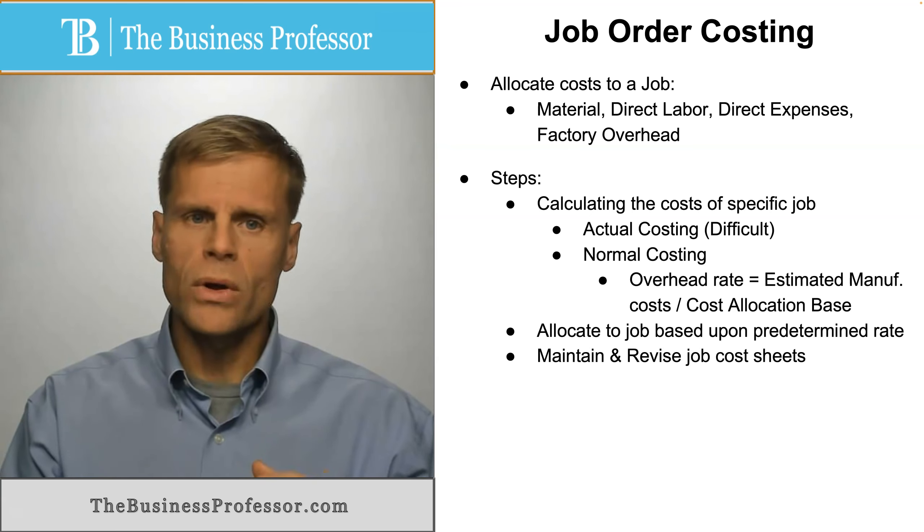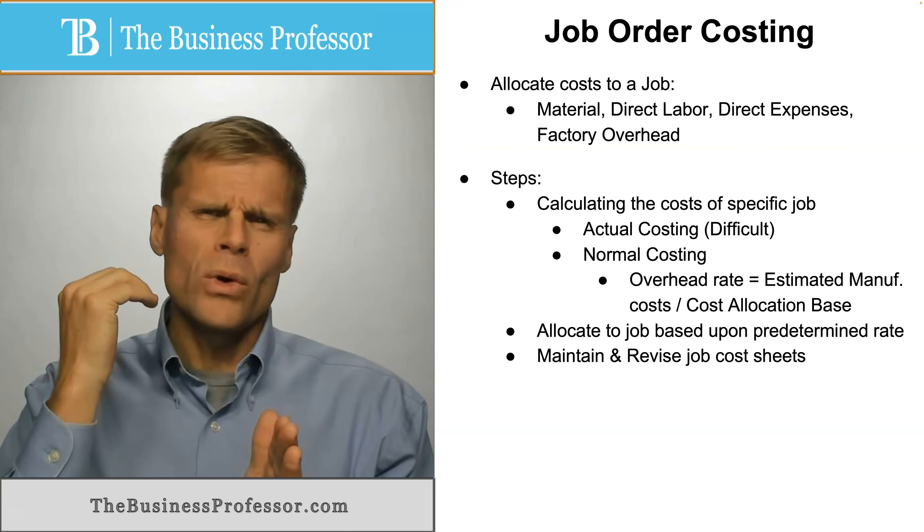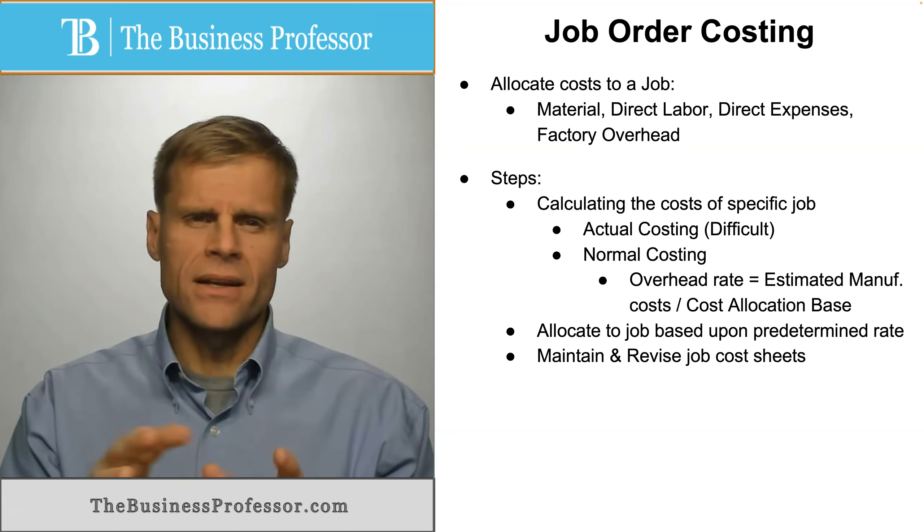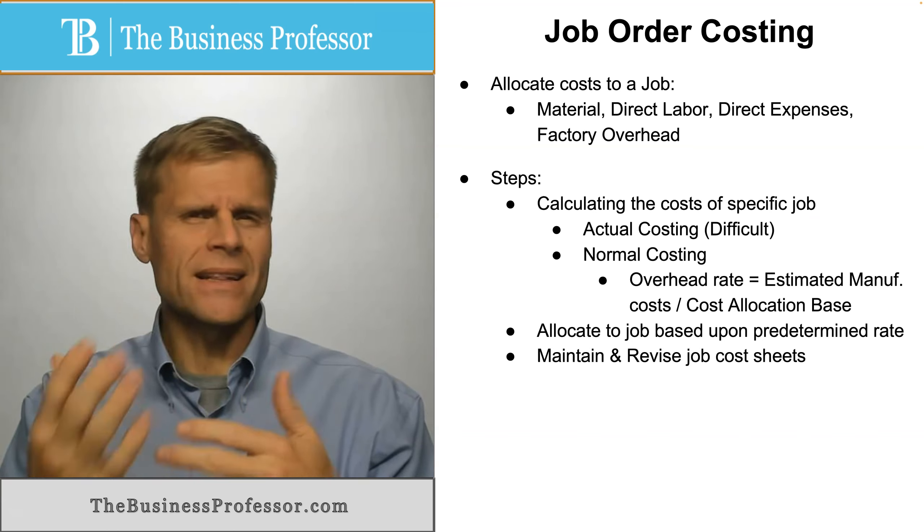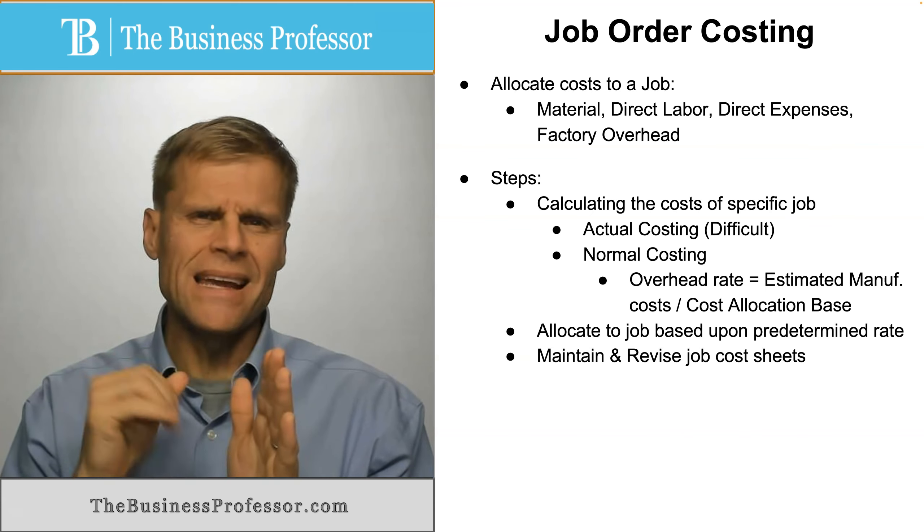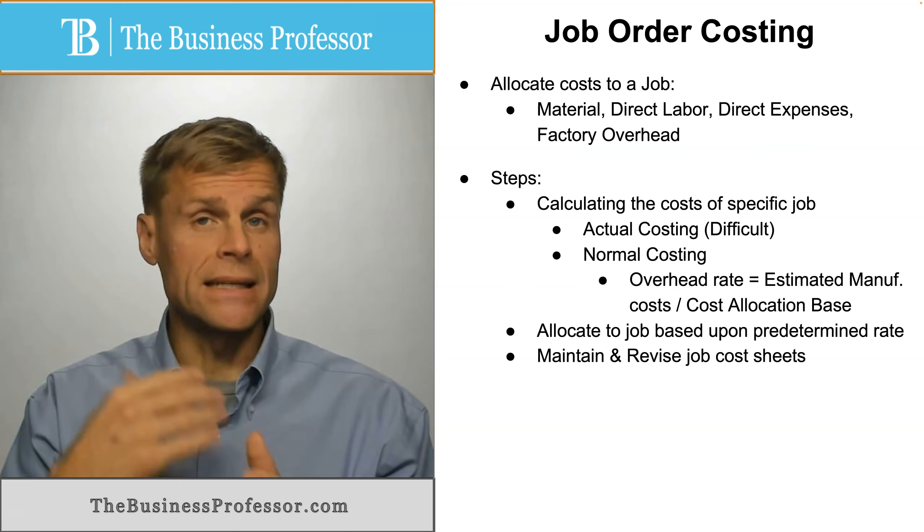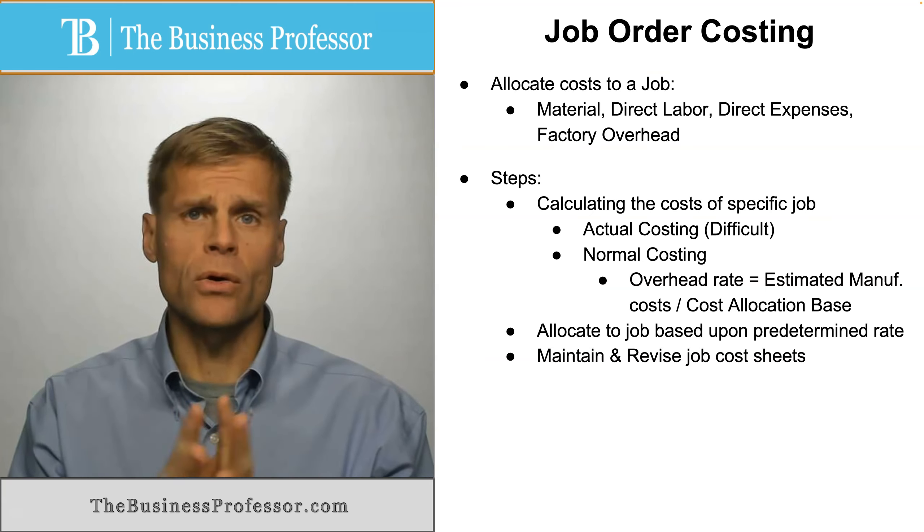Companies employ a normal costing approach. When you're allocating things that are difficult—generally your materials and direct labor, that's not that difficult, all of your direct expenses—your indirect expenses, like your factory overhead and things like this, that's a little more difficult.